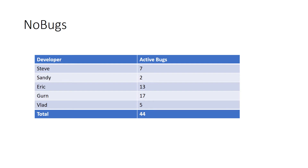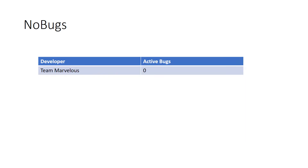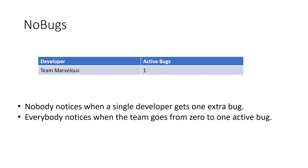Let's look at a different scenario. Here we have a team called Team Marvelous, which was the team name of one of the agile teams I was on once. Team Marvelous has zero active bugs. Watch for the change. Nobody notices when a single developer gets one extra bug, but everybody notices when the team goes from zero to one active bug. That is the philosophy behind no bugs — going from zero bugs to one bug is a fundamentally different sort of thing than going from 42 bugs to 44.